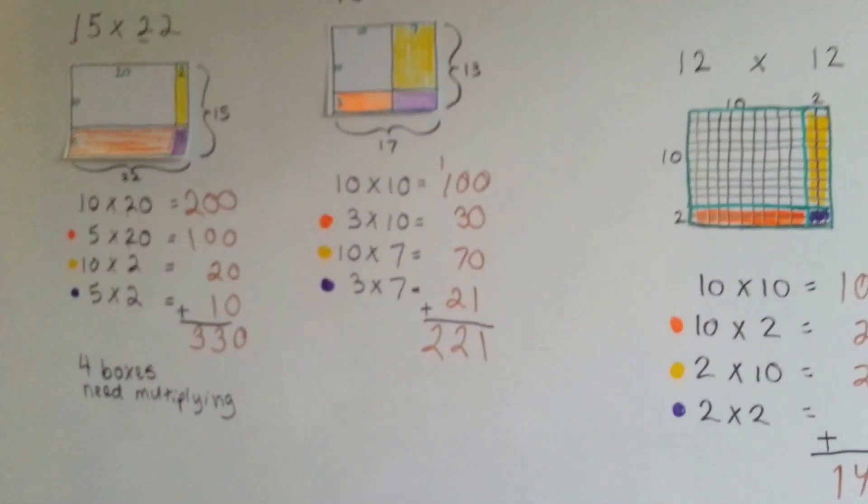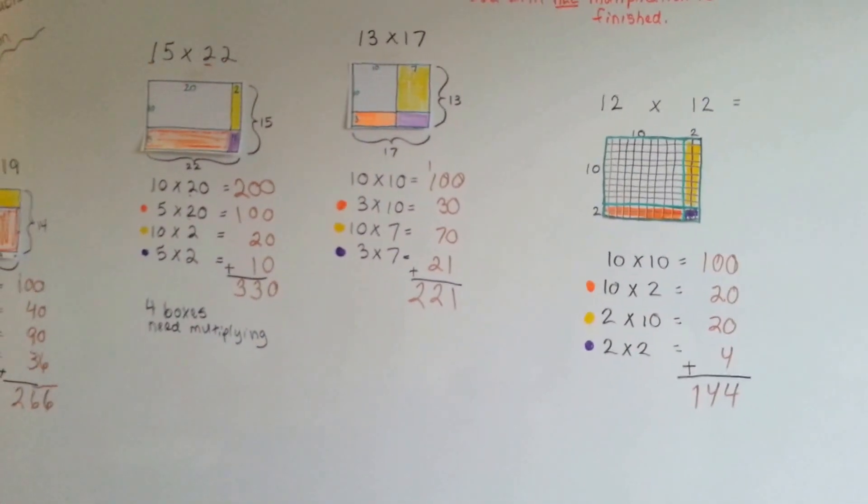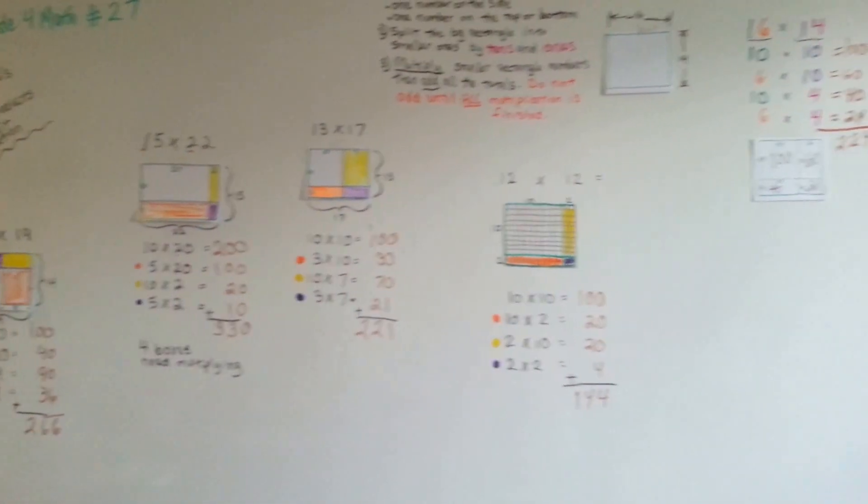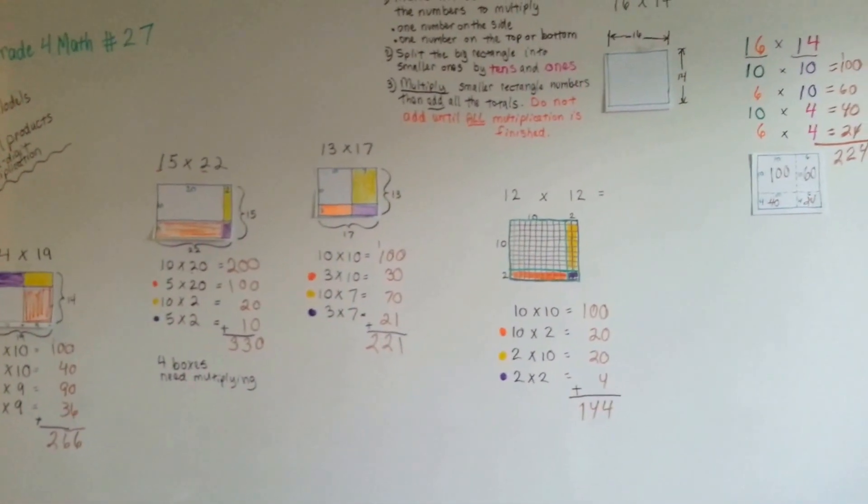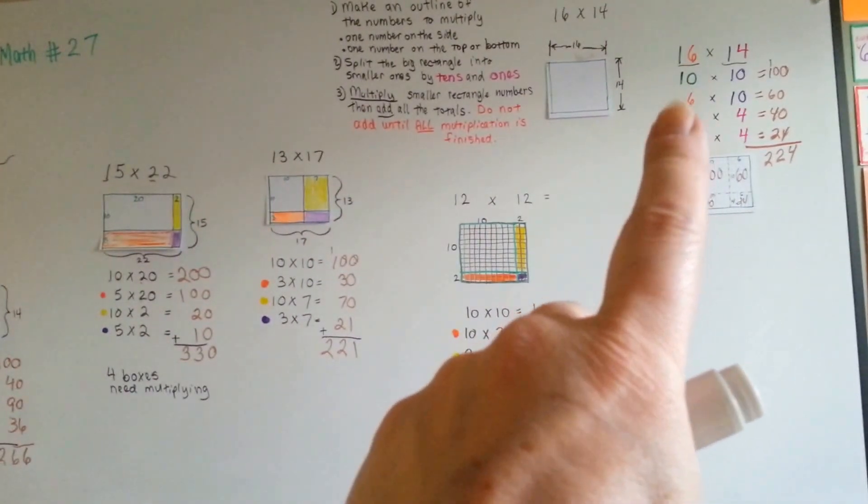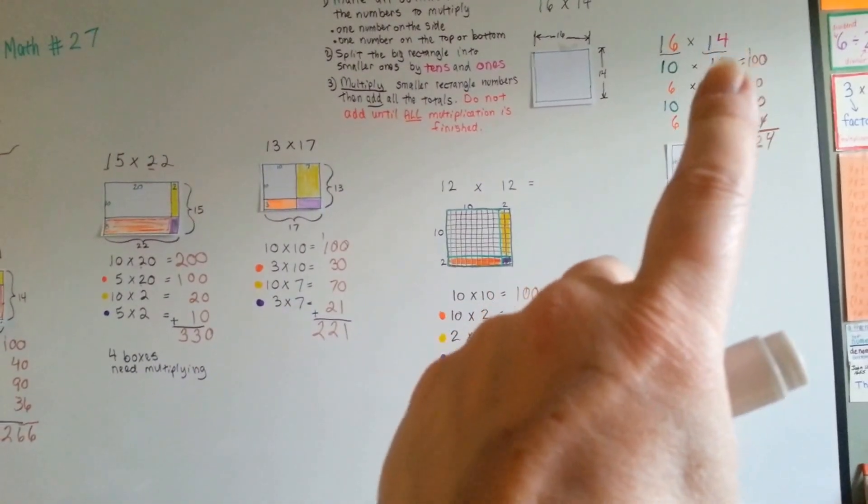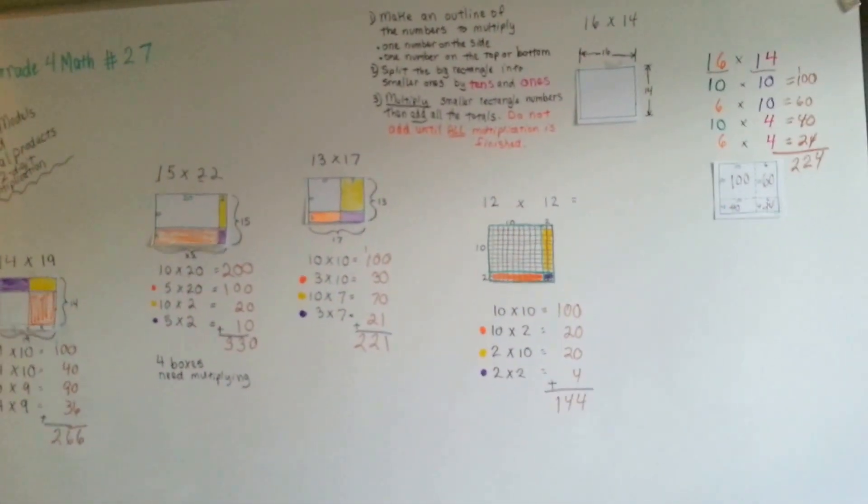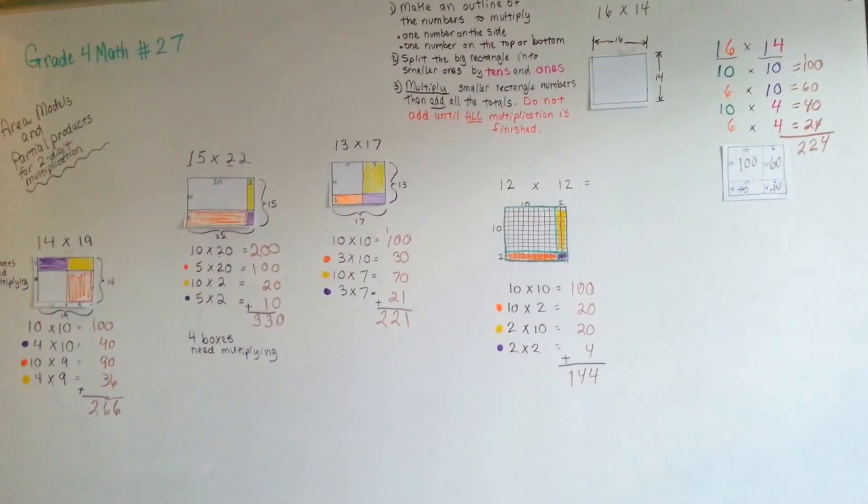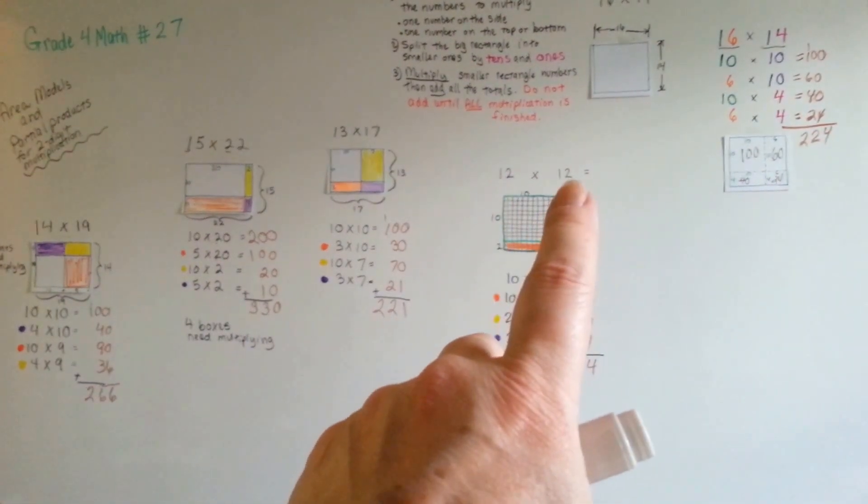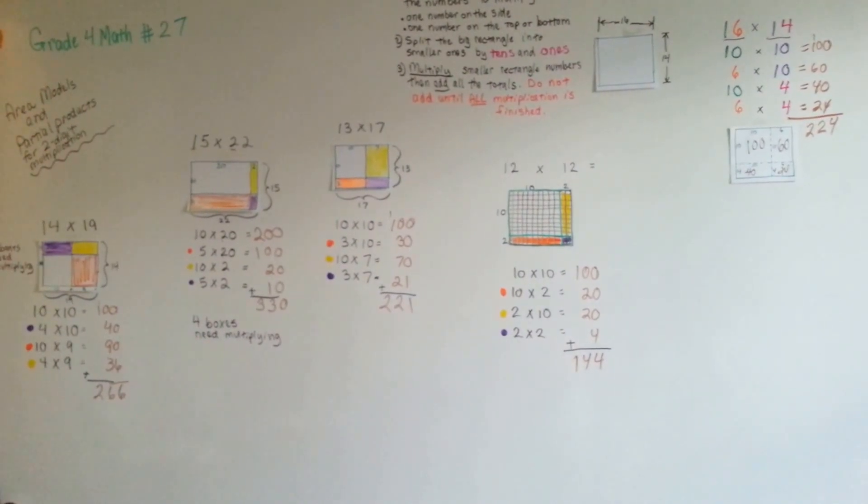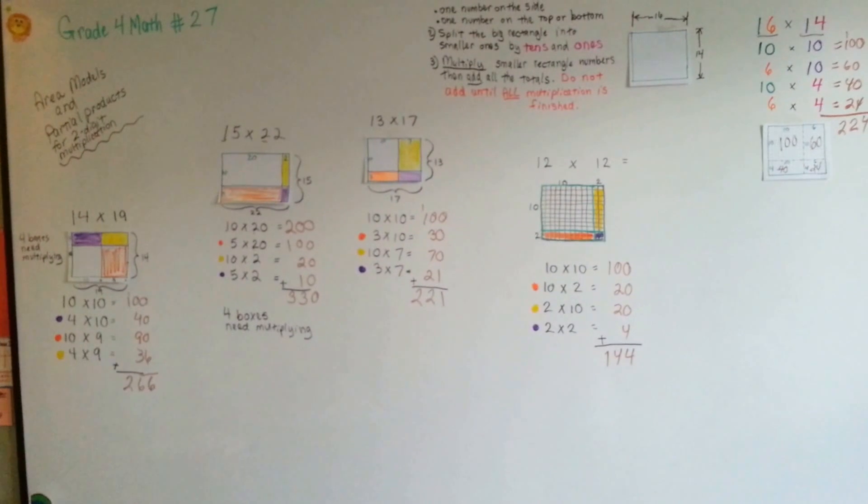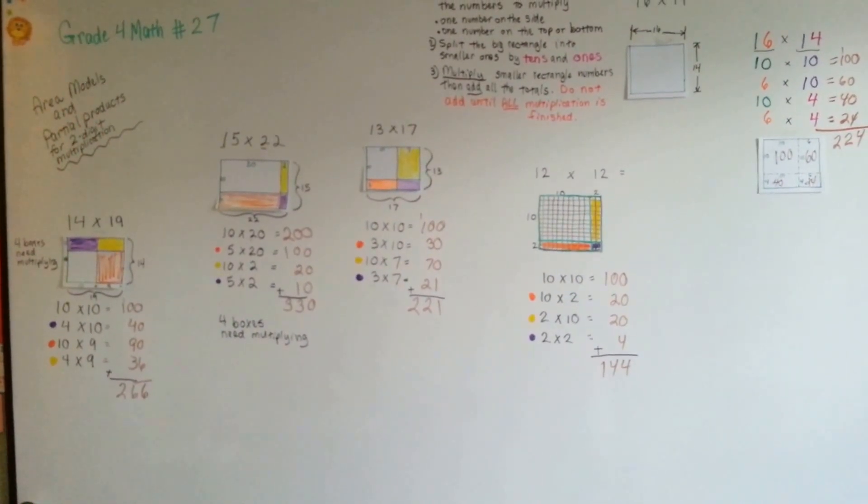So, that's a strategy to do multiplication by using area models and partial products. All you have to do is break that big number down into pieces, and then multiply them together. But just make sure that you multiply the tens times the tens, the ones times the tens, the tens times the ones, and the ones times the ones. So, there's four parts that would have to be multiplied in two two-digit numbers. Now, if there was three digits in this number and three digits in that number, you would have a lot more parts to multiply. So, now you know how to do the area models and partial products for two-digit multiplication. I'll see you next video. Bye.